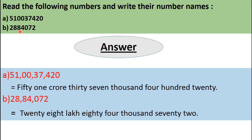Similarly, we solve number B where the number is 2884072. First we put commas: we place the first comma before 0, since it is the third number from the right. After that, we put a comma after every second number, so the next comma goes before 8. The next second number is 2, but we do not put a comma in front of it since there are no other numbers before it. So we write the number name as 28,84,072.